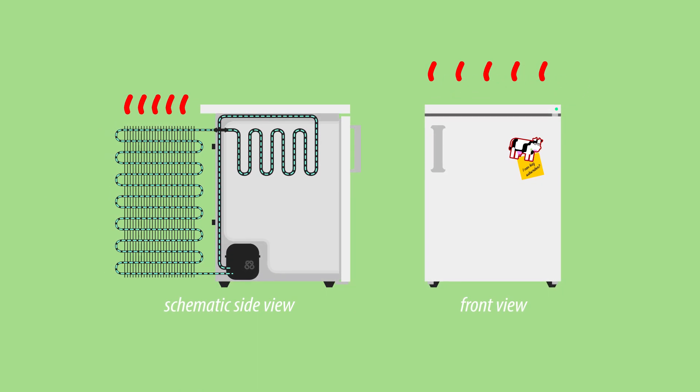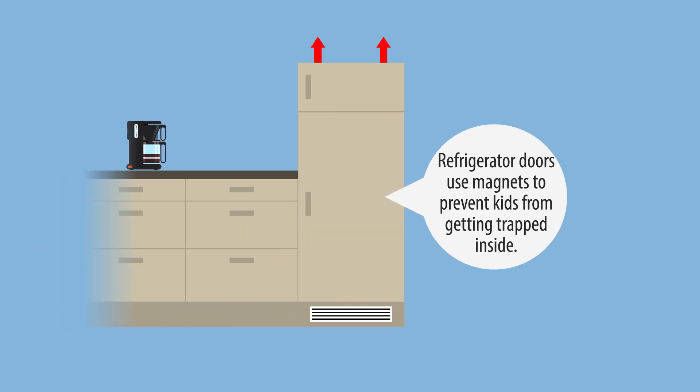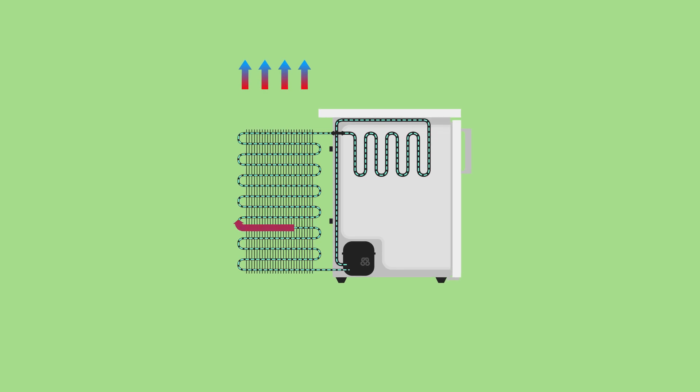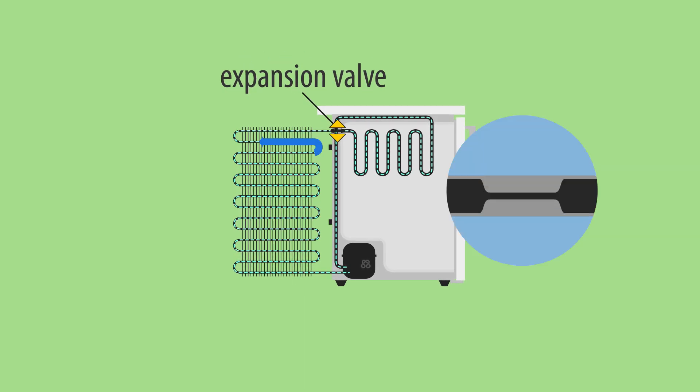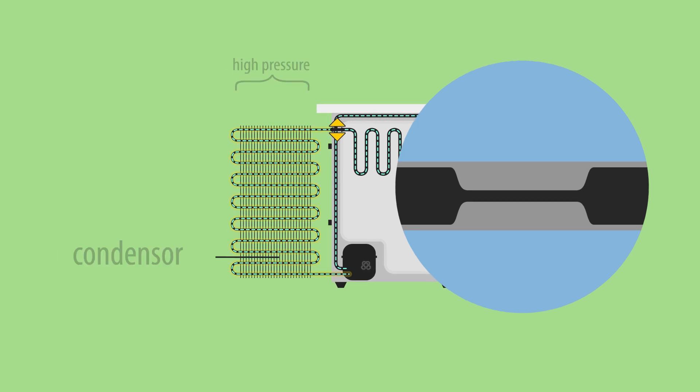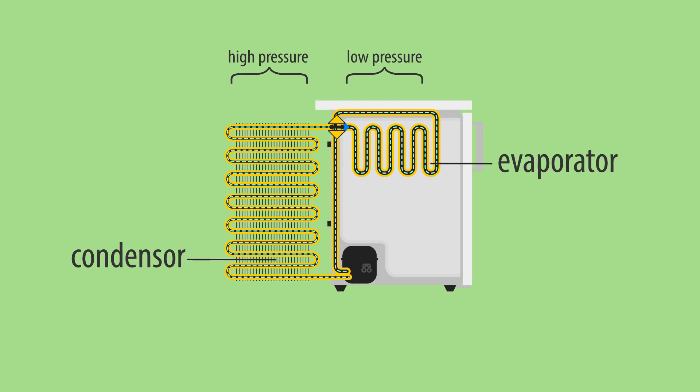This is also why warm air rises from the back of your fridge, and why built-in fridges need air vents top and bottom. When the coolant has run its course through the condenser, it goes through the expansion valve, which is basically a tiny hole constricting the tubing, between the high-pressure condenser and low-pressure evaporator.